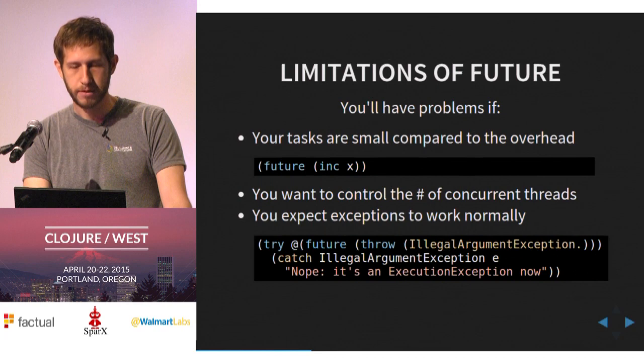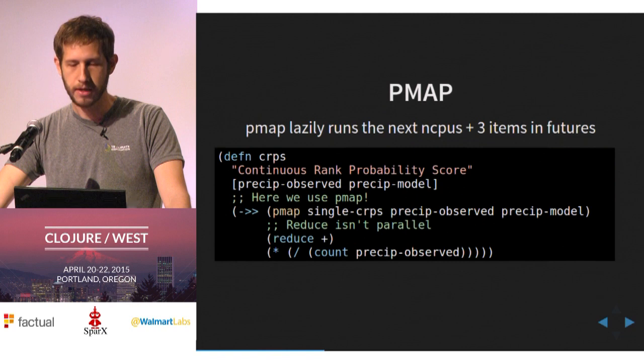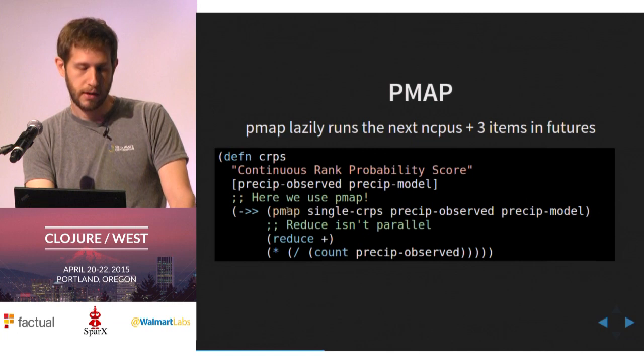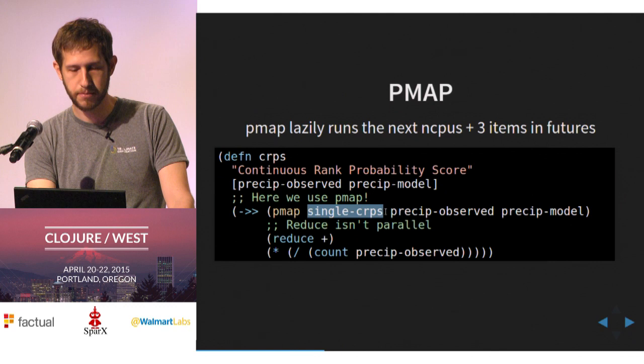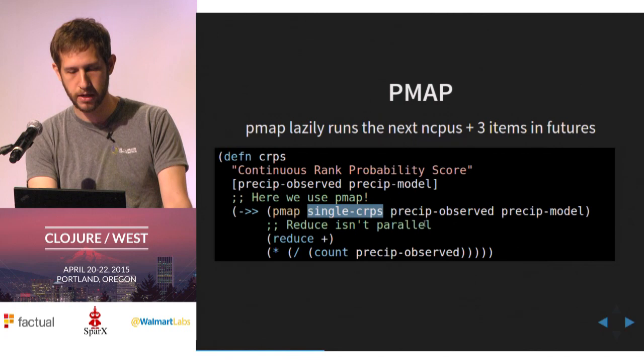Future is simple. PMAP lets you do slightly more complex things pretty easily — it's really just a parallel map. It runs roughly the next nCPUs plus three things in futures. And it's lazy. In the example, one of the big pieces of work is the CRPS computation on each time step — so let's split that up and do it in parallel. We'll just do a PMAP and reduce. Reduce isn't parallel, so it'll have to wait until all that work is done, then we scale as normal.